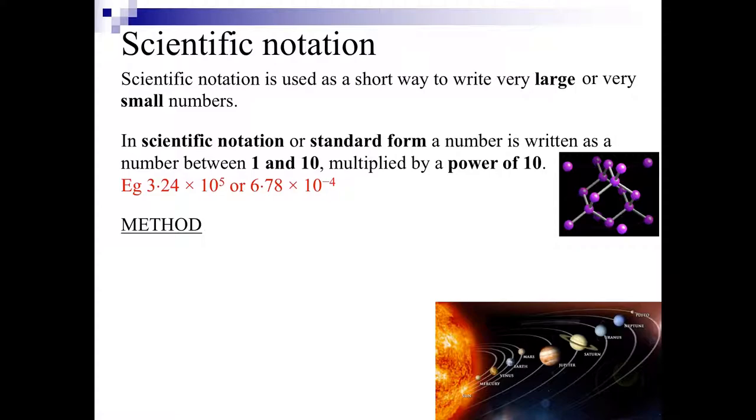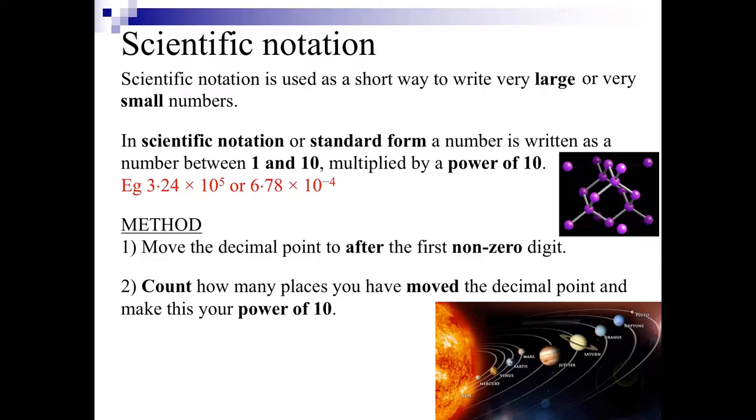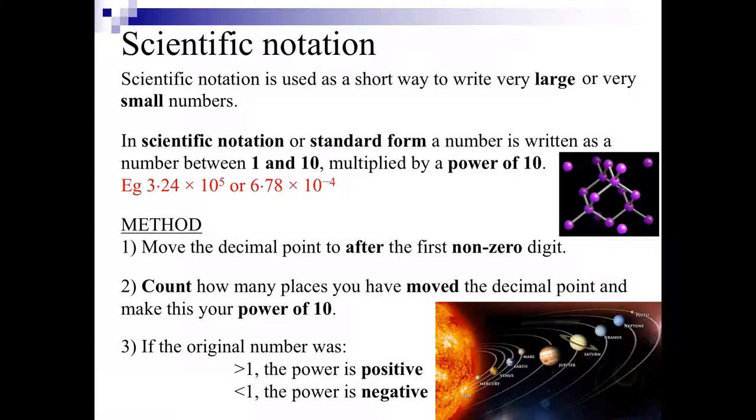So what we do: we move the decimal point to after the first non-zero digit, we count how many places you've moved the decimal point and make this your power of 10. Now if the original number was greater than 1, the power is positive. If the number is less than 1, the power will be negative.